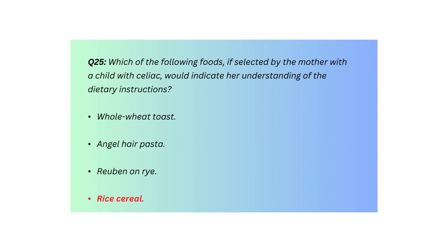Q25. Which of the following foods, if selected by the mother with a child with celiac disease, would indicate her understanding of the dietary instructions? Whole wheat toast, angel hair pasta, Reuben on rye, or rice cereal.